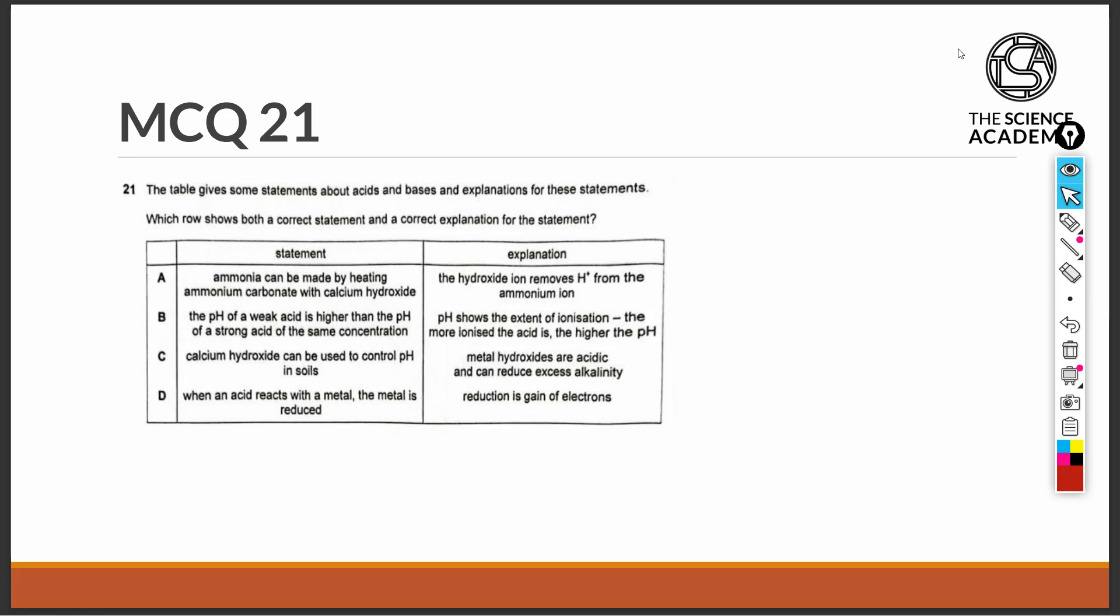Question 21. The table gives some statements about acids and bases and explanations for these statements. Which row shows both a correct statement and a correct explanation for the statement?